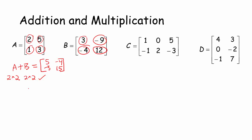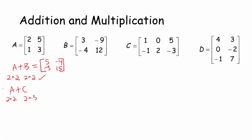Matrices are different from numbers in that you can't always add any two together. For example, A is 2×2 and C is 2×3. The negative 3 in matrix C is in the second row, third column, but there's no such entry in matrix A. Since addition is defined by matching up all corresponding entries, it doesn't work for matrices of different sizes. So A plus C is undefined.